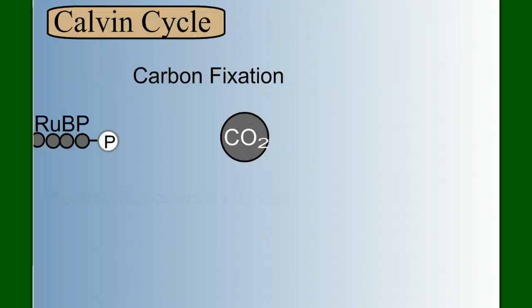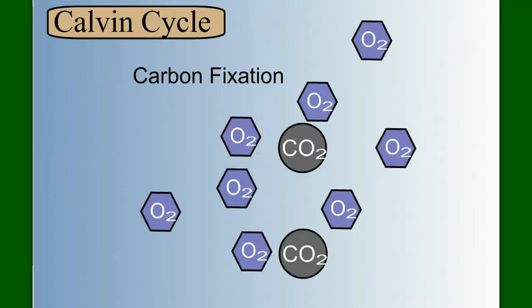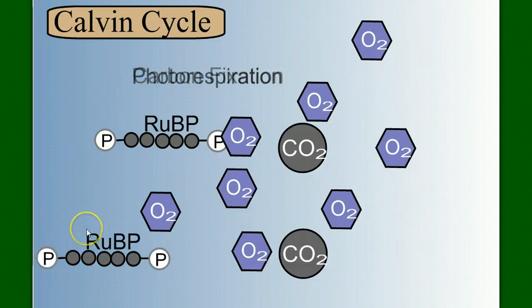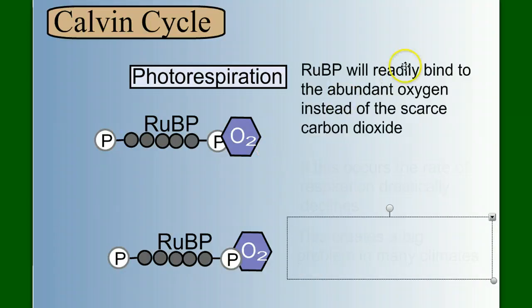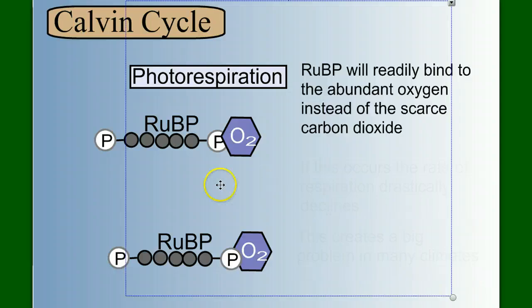Well, let's look back at carbon fixation. In the Calvin cycle, RuBP picks up carbon dioxide, but RuBP in a different environment where there's a lot of oxygen and not a lot of carbon dioxide, RuBP is not so picky. RuBP will combine just as readily with oxygen as it will with carbon dioxide. So instead of carbon fixation going on, we have a process called photorespiration.